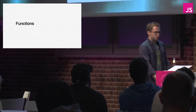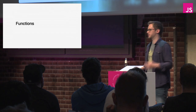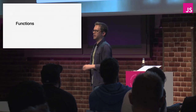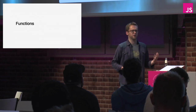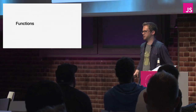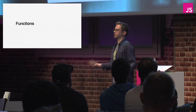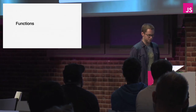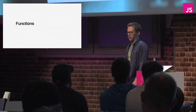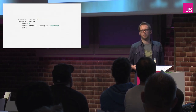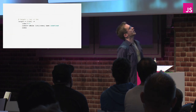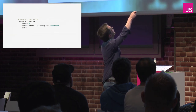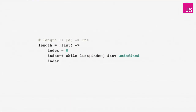Functional programming is all about programming without side effects. If you were in the parallel JavaScript talk earlier, you'll have heard that side effects are one of the biggest barriers to parallelising a program — you can't reason about changes to global state that must happen in a certain order. So what does it look like to program functionally? Say you want to calculate the length of a list: you could set a counter to zero, then increment it for every element and return the final value.